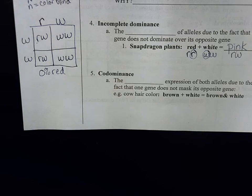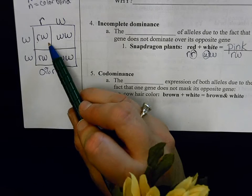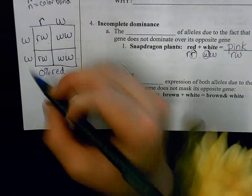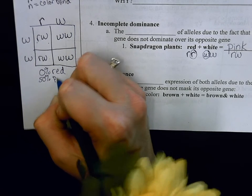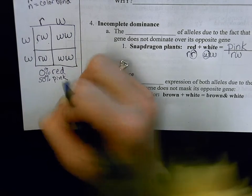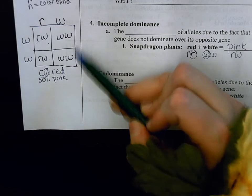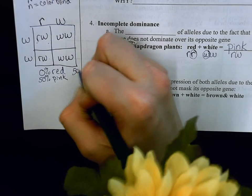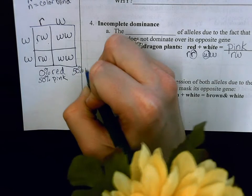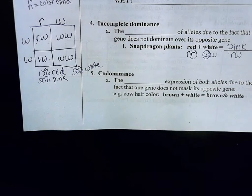If I ask what percent are pink, that would be this box and this box, and I would say 50% will be pink. And that means these two boxes would be 50% showing the white phenotype.